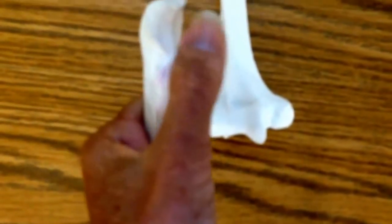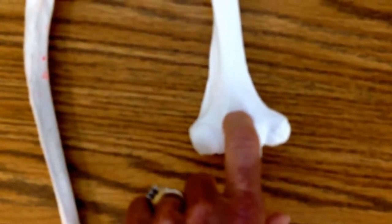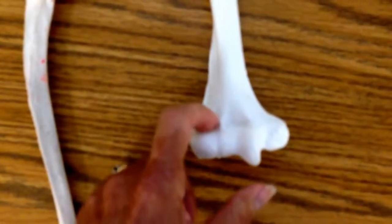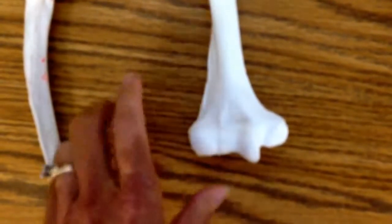This on the ulna is the coronoid while on the humerus you have the coronoid fossa and a radial fossa where the radius fits in.